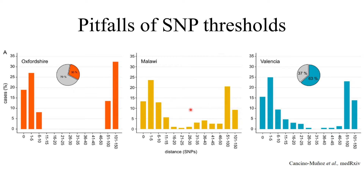But the problem is that in other settings there is a continuum. You see two groups — one with few SNPs likely representing ongoing or recent transmission, and another with many SNPs clearly unrelated — but what happens with the cases in between? If we find two cases separated by 15 SNPs, are they linked in the same recent transmission chain or not? This problem also occurs in settings like Valencia, a Spanish city with low tuberculosis incidence, where we find this continuum, possibly indicative of continuous transmission over the years.